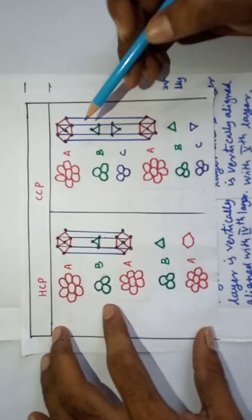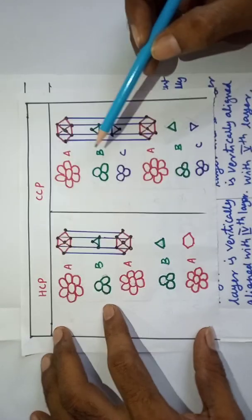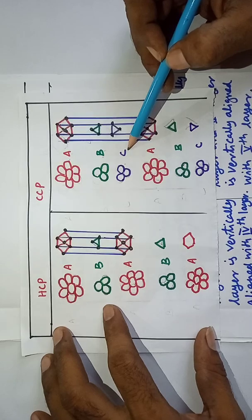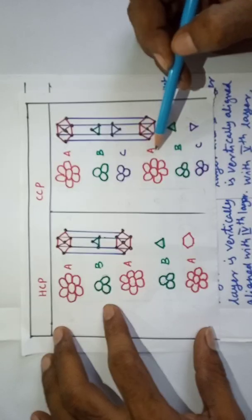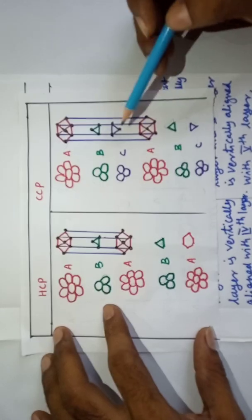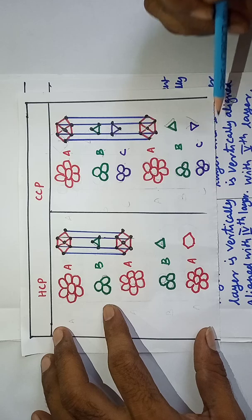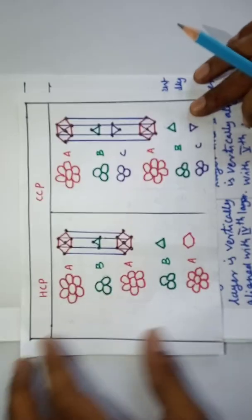In Cubic Closed Packing, this is A, B, C, again A, B, C. This is the ABC, ABC arrangement.